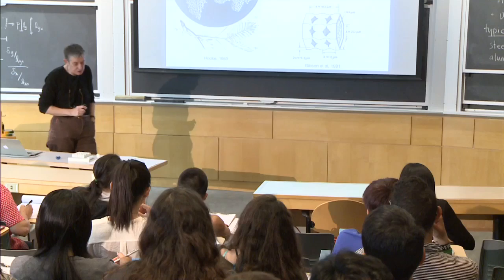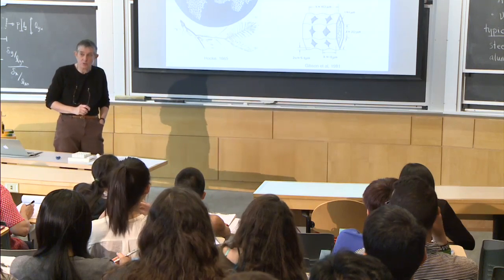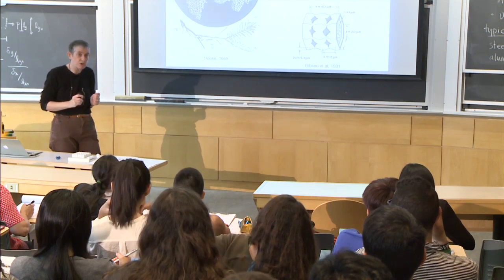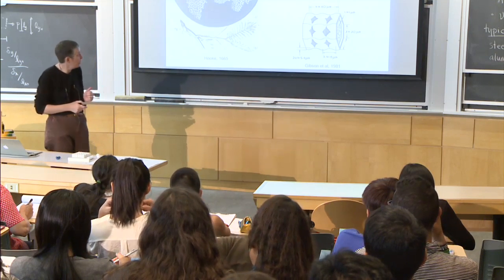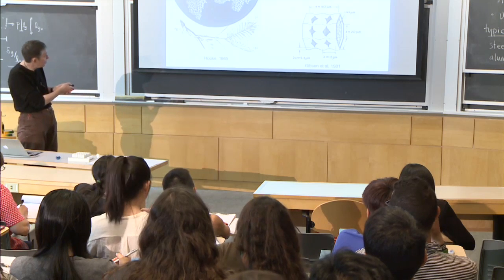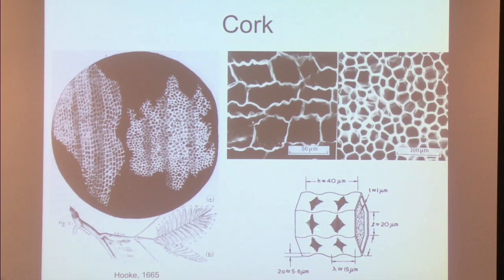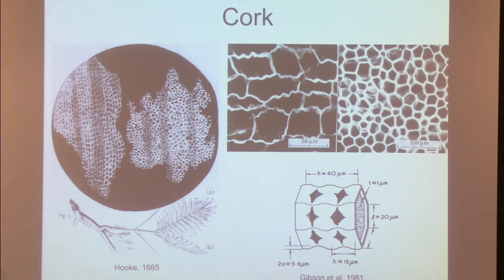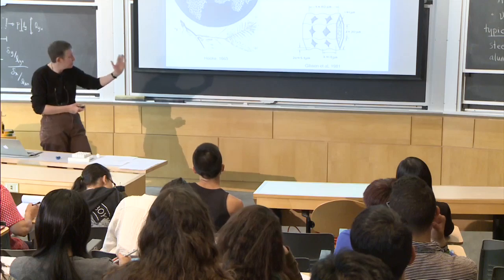One of the interesting things about cork is it has a Poisson's ratio of zero in a particular loading direction. If you think of the cork cell, this is a schematic of the cell — you can see how the cork cells have these little corrugations in the walls. The walls aren't straight. So if I slice it one way, I get the box shape; if I slice it the other way, I get the circles or hexagons.